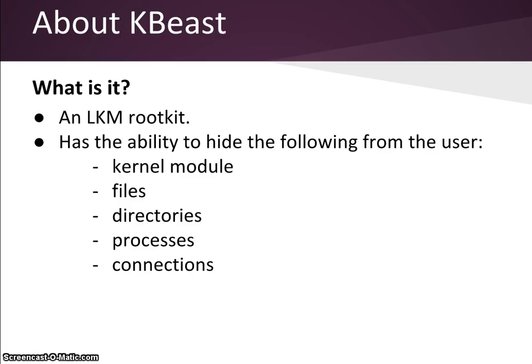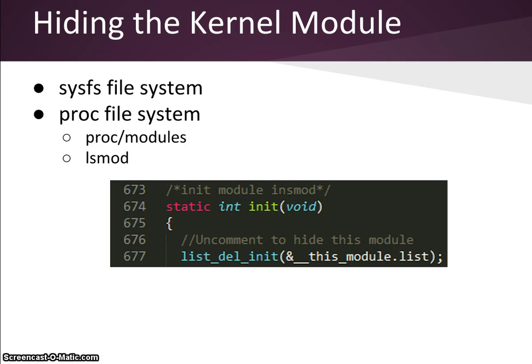The PROC and SysFS file systems are used to provide an interface to kernel data structures. The PROC file system allows users to view kernel-level information, such as the list of modules loaded by the system. Reading through the contents of the PROC modules list or running the lsmod command allows users to access this information. It's very easy for kernel modules to hide from these file systems as it requires only one line of code to do so. Line 677 shows how K-beast hides its LKM from the PROC file system by deleting itself from the list. This module variable maintains a reference to K-beast's LKM, and the macro listdelinit is used to delete the module. In doing so, K-beast's LKM remains active in memory while not being seen by the lsmod or catproc modules commands.